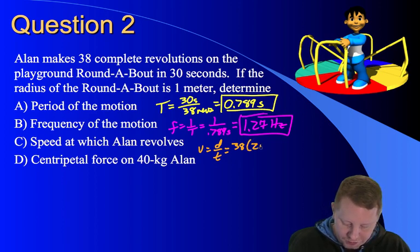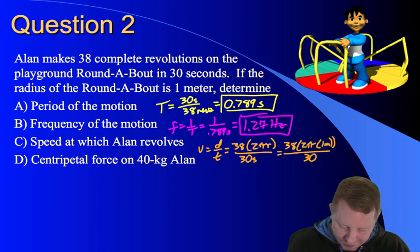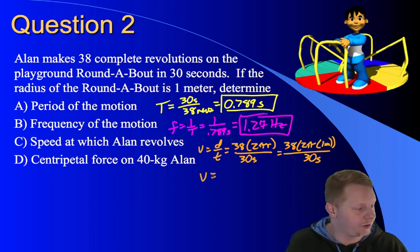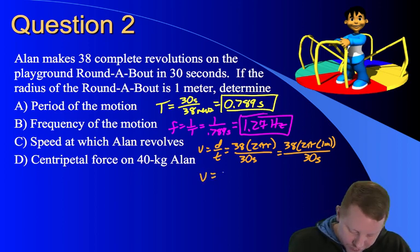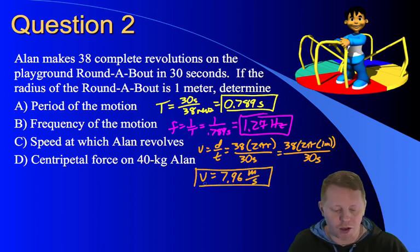Which will be 38 times 2π, times our radius of 1 meter in 30 seconds. And I come up with the speed then of about 7.96 meters per second.